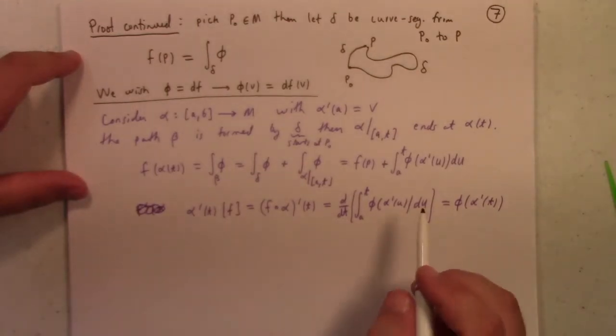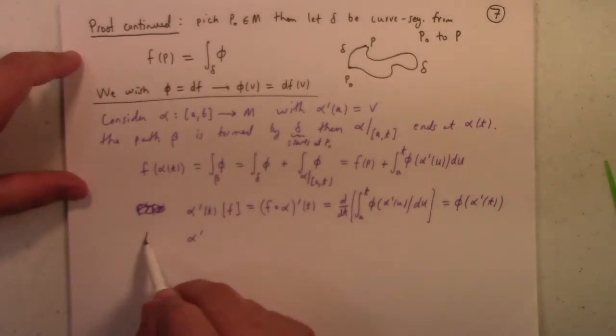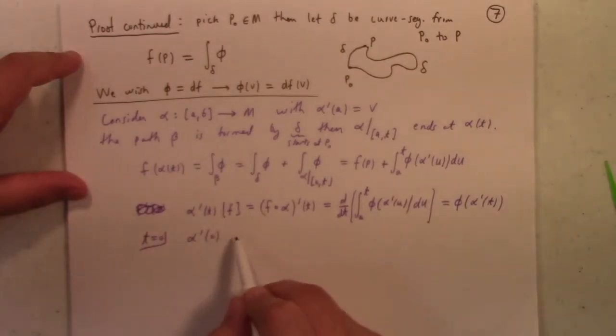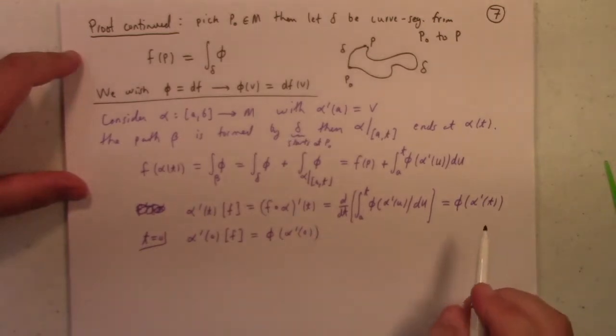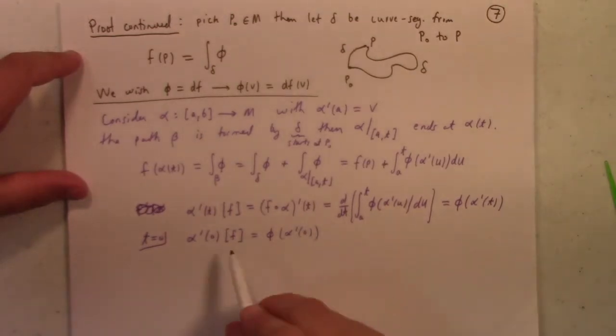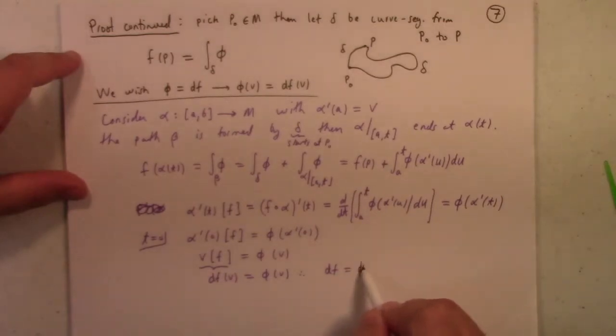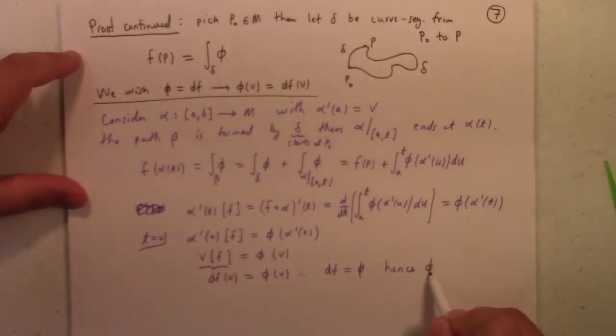But on the flip side, I have alpha prime, well, not flip side, just by putting T equal to zero, I have alpha prime of zero, acting on F is equal to phi of alpha prime of zero. So notice then, of course, that that gives me V acting on F is equal to phi of V, or this, of course, is nothing more than dF acting on V equals to phi of V, and so there you got it, dF is equal to phi, hence phi is exact.